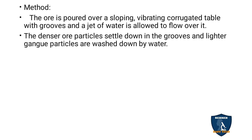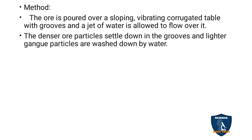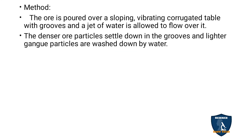The ore is poured over a sloped, vibrating, corrugated table with grooves and a jet of water is allowed to flow over it. The denser ore particles settle down in the grooves, while the lighter gangue particles are washed away by the water. Since the method depends on density, the denser ore settles in the grooves and the lighter gangue comes out. This is called the hydraulic method of separation.